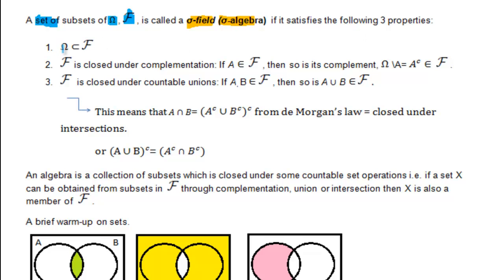The first property says that omega must be a member of F. Property number two: F is closed under complementation. What this means is that if a subset A belongs to F, then so is its complement, often denoted as A to the power of C.